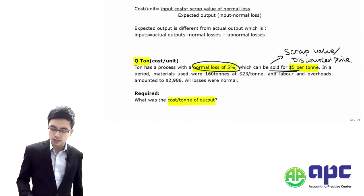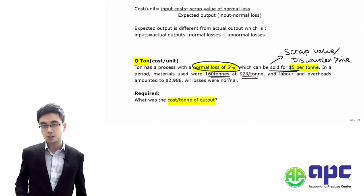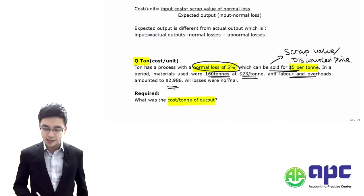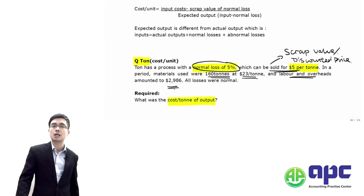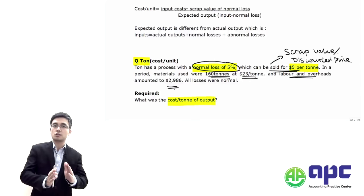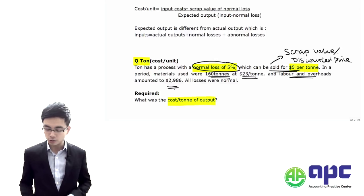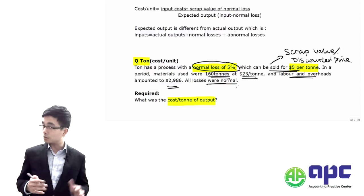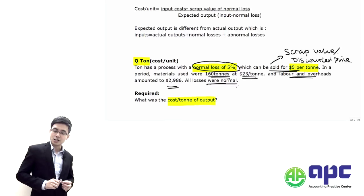In the period, materials were 160 tonnes at $23 per tonne, giving a total direct material cost. Labour and production overhead expenses are $2,986 — the conversion cost for the period. We assume all losses were normal losses, ignoring abnormal losses for now.